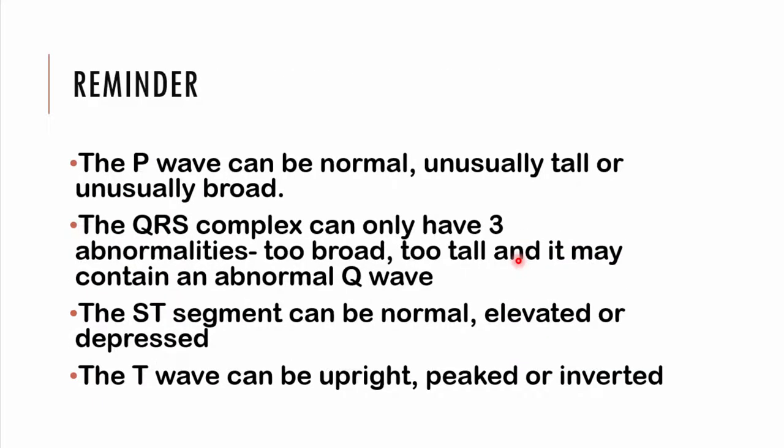The P waves could be normal, unusually tall, or unusually broad. The QRS complex has three possibilities: it could be too broad, too tall, or contain an abnormal Q wave. The ST segment could be normal, elevated, or depressed. The T waves could be upright, peaked, or inverted. You could also have additional waves such as a U wave, which will be discussed at the end of the next video.